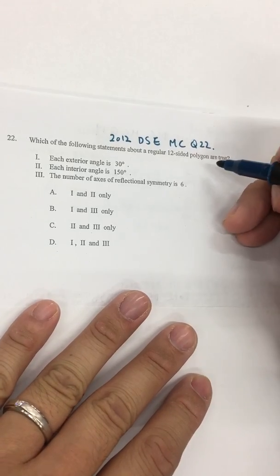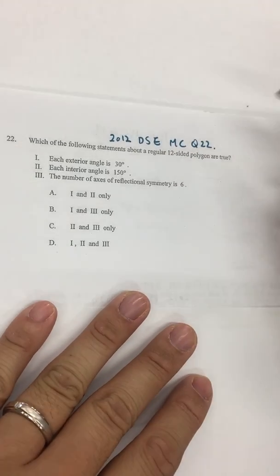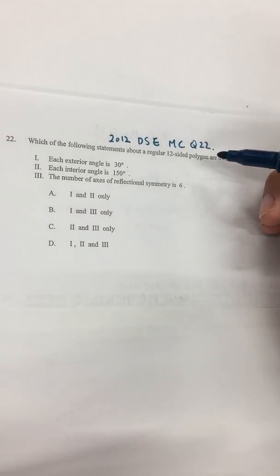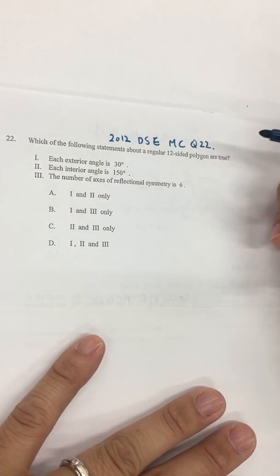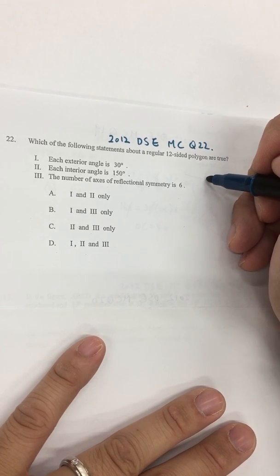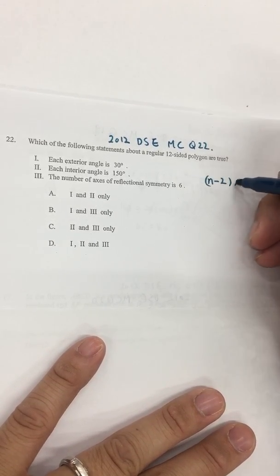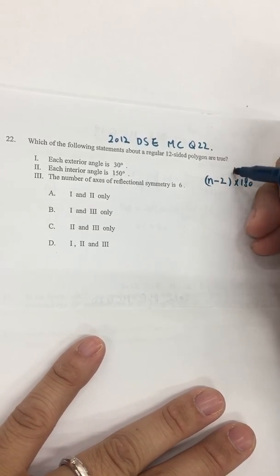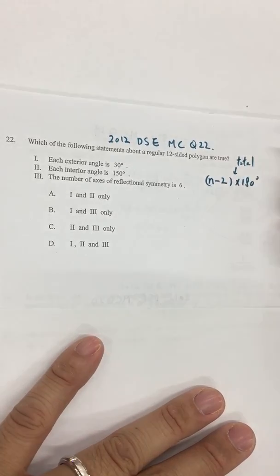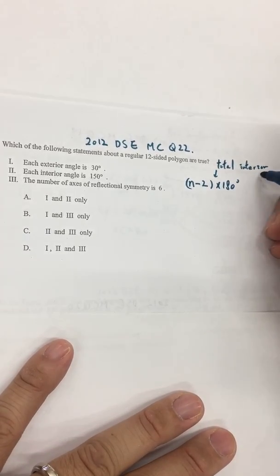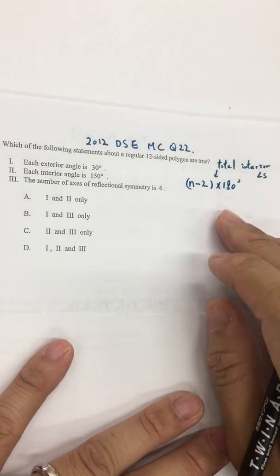The first one is to calculate the interior angle of N-sided polygon. Let's say they are N-sided. So how do we calculate the interior angle? Normally we have this equation which is the total interior angle is (N minus 2) times 180 degrees. So this is the total interior angle.